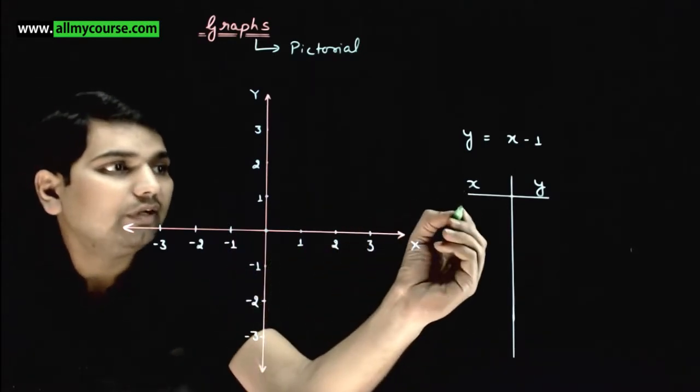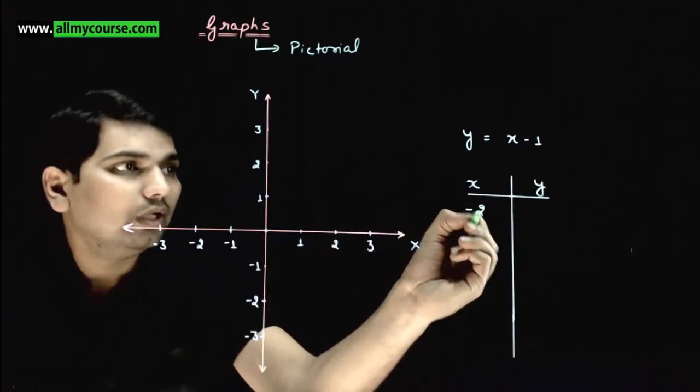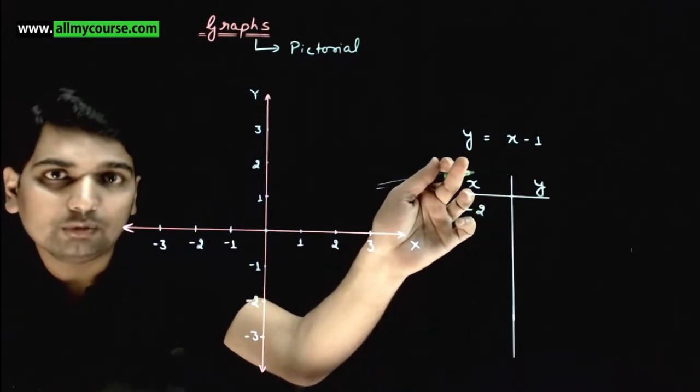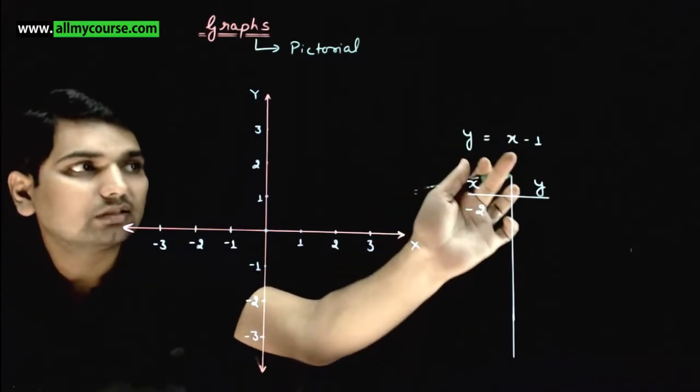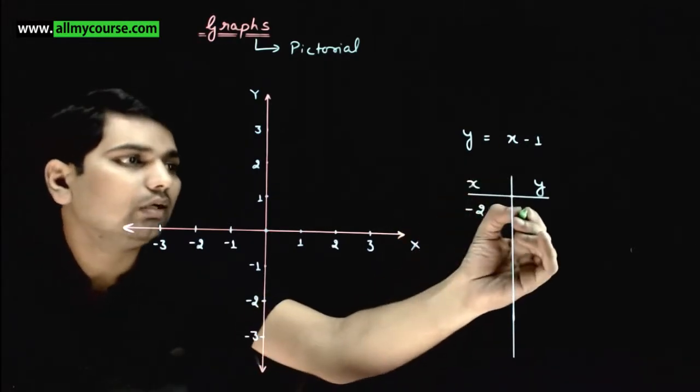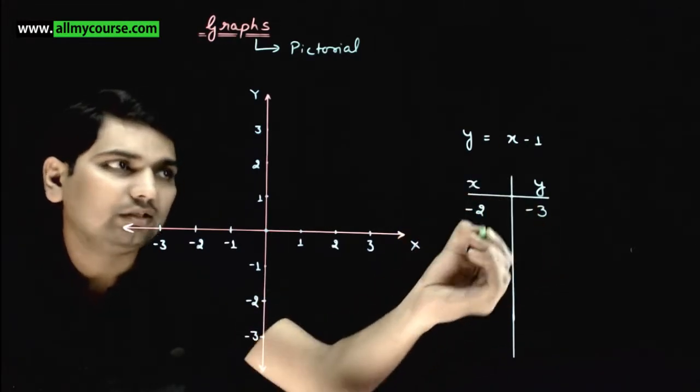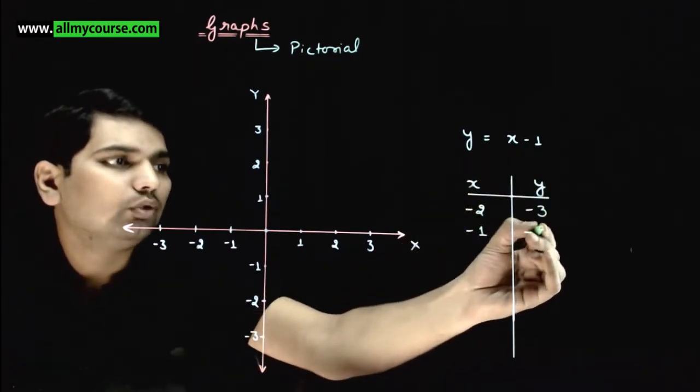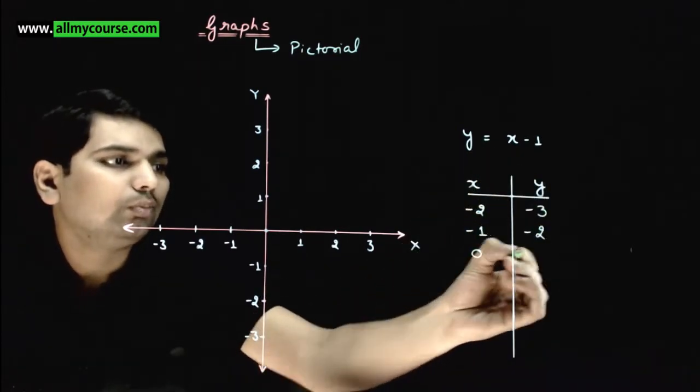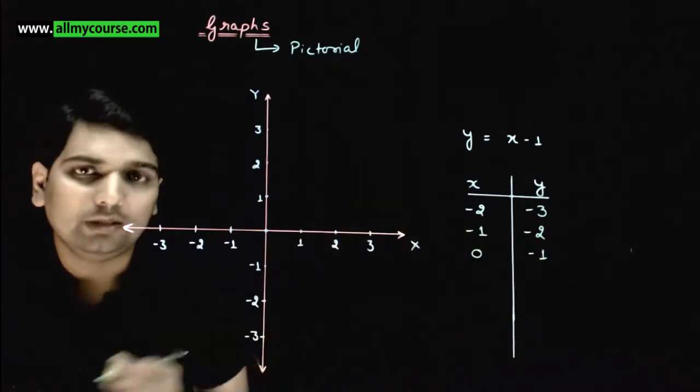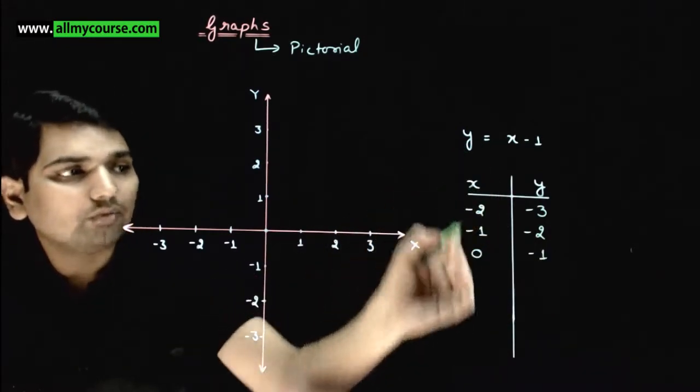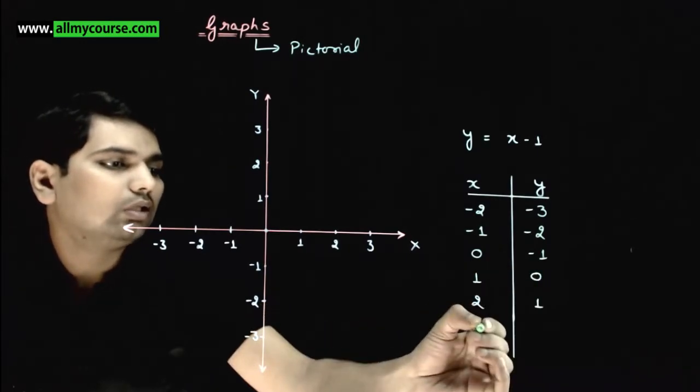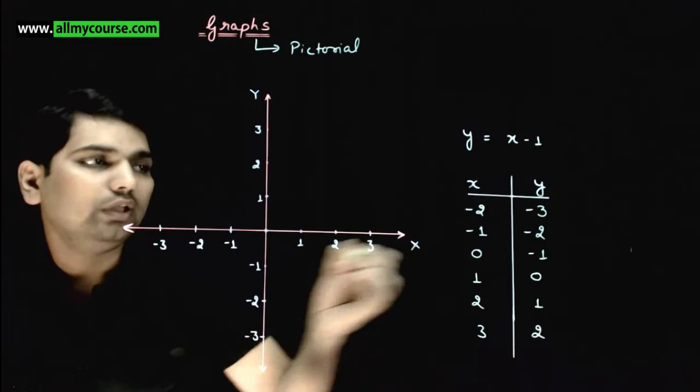So if I put x value as minus 2, and try to find the value of y at x equals minus 2, putting x equals minus 2 in this equation, what will y be? Minus 2 minus 1 equals minus 3. At x equals minus 1, y will be minus 2. At x equals 0, it will be minus 1. If I substitute x as 1, y value is 0, at 2 it's 1, and at 3, y value will be 2.